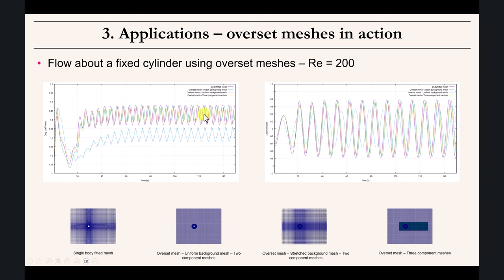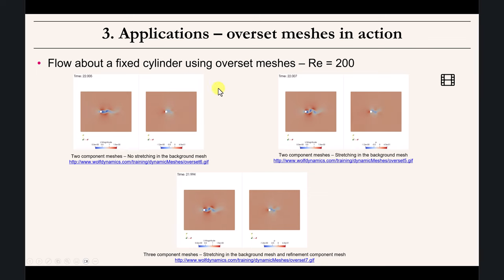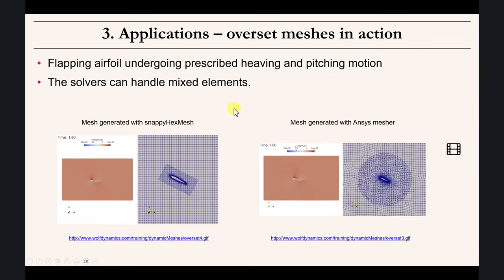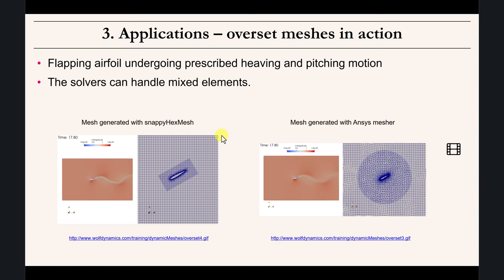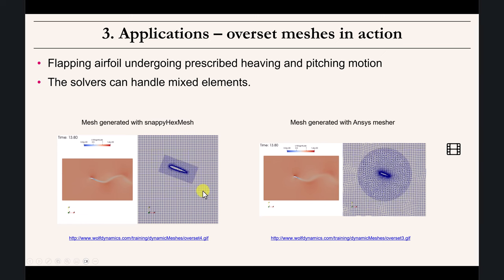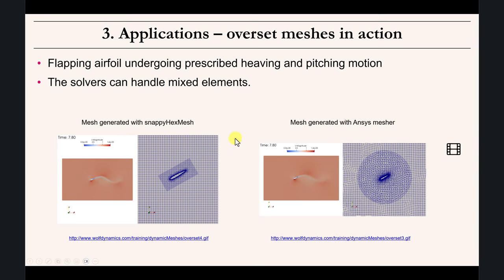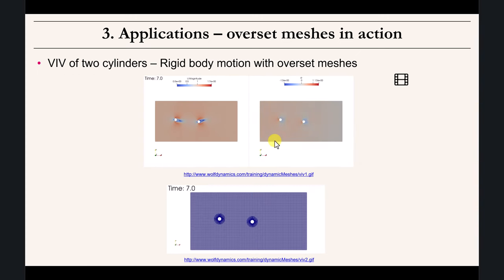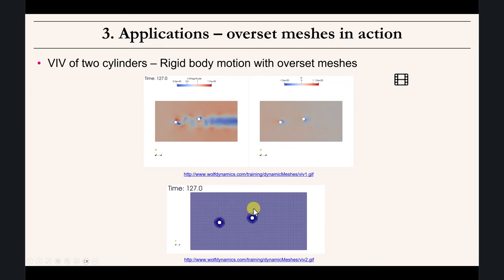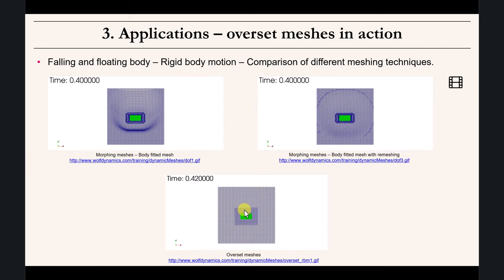Despite the interpolation artifacts, by adding overset the solution is pretty similar — the frequency is the same though slightly shifted to the right. If you compute average values you'll get similar solutions. We also look at airfoils and flapping, and as you can see the solution is essentially the same. You can use any type of mesh — the previous example used block meshes (structured), while this one uses unstructured meshes from snappy or other tools. It doesn't matter — just put everything together and merge.